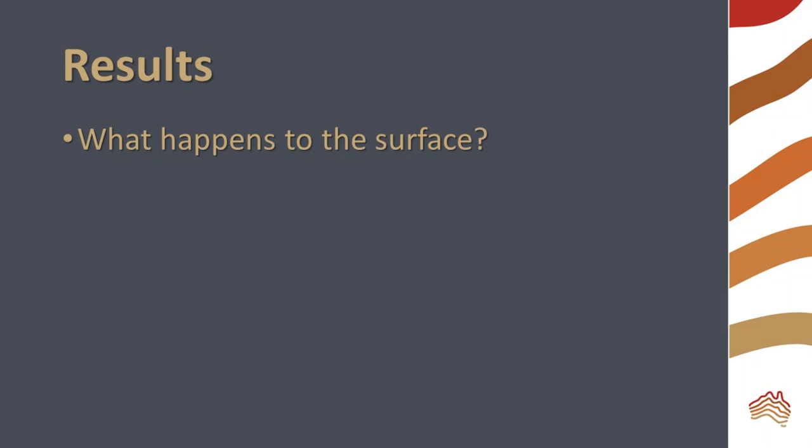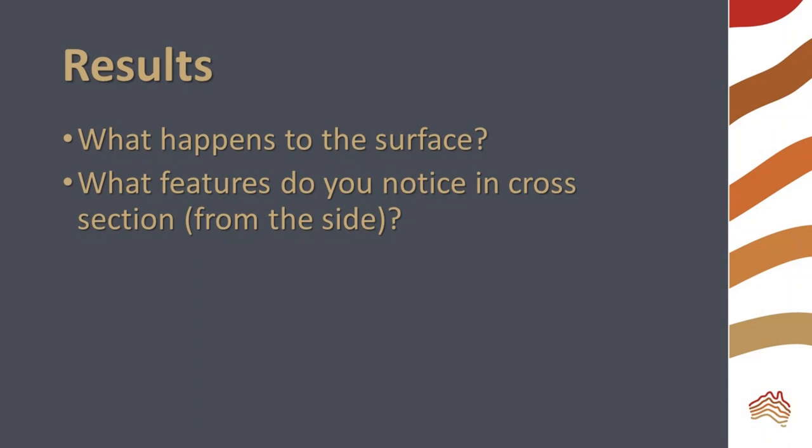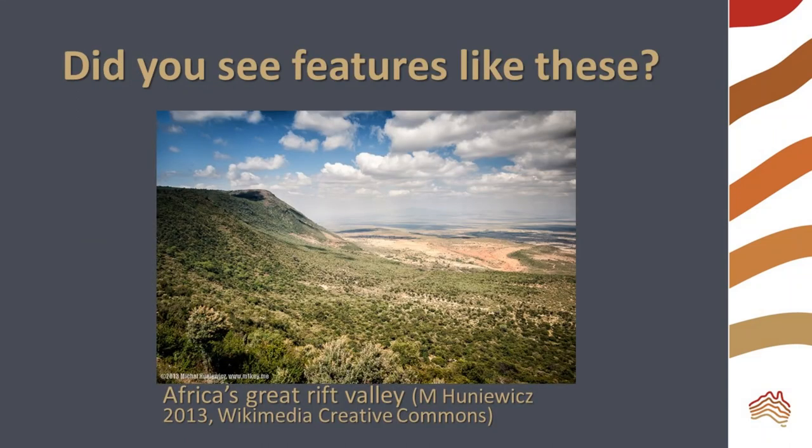Examine the result of your experiment. What happened to the surface of the model? What features do you notice in cross section? Did you see any features like those in the photo? Rift valleys, like that in East Africa, are formed by continental divergence.